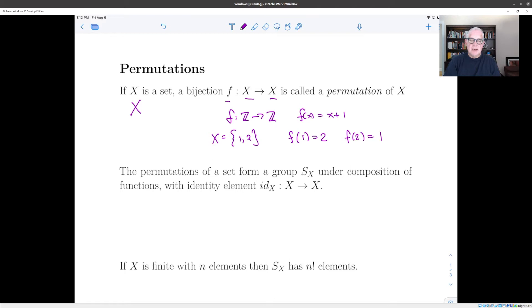So we remember that a bijection is a function which is both injective and surjective. So every element in X goes to exactly one element in X itself. And so fundamentally, it's just a rearrangement. And the permutations of a set form a group S_X, where the group operation is composition of functions, and the identity element is the identity map.